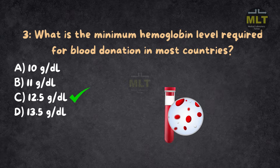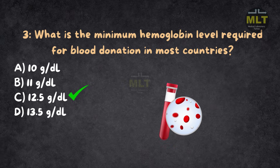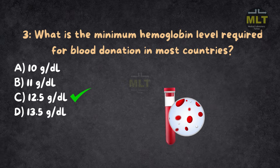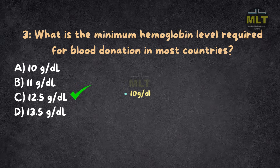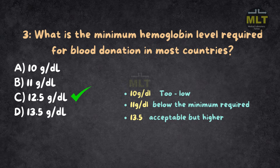Explanation: A minimum hemoglobin of 12.5 g/dL ensures the donor has enough blood to safely donate without compromising their health. 10 g/dL is too low for safe blood donation. 11 g/dL is also below the minimum required level. 13.5 g/dL is acceptable but higher than the required minimum.